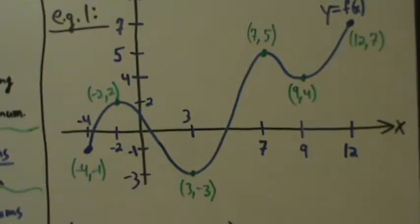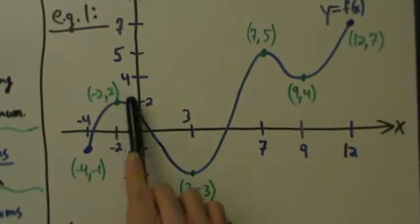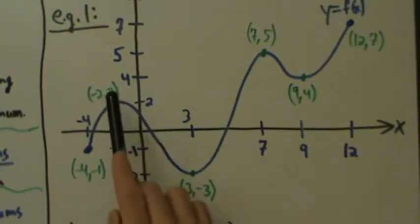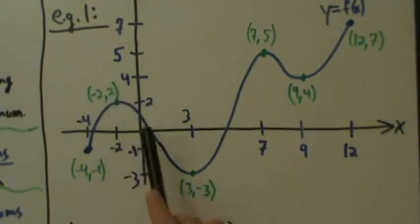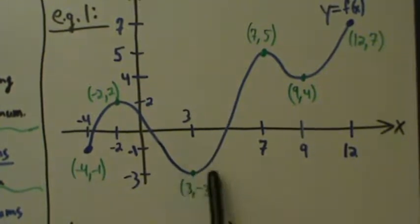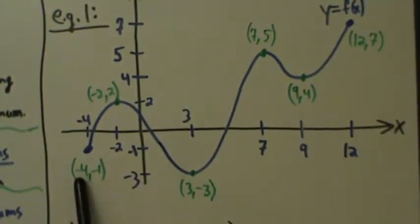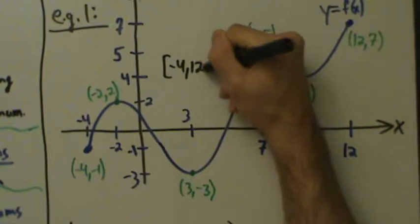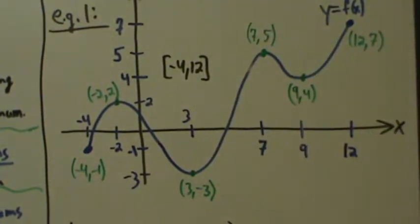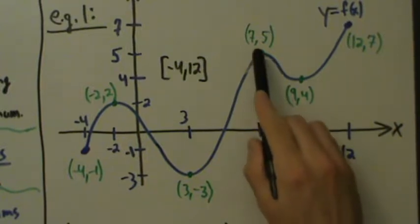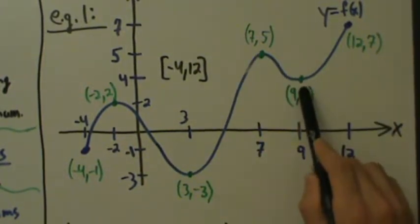So where are the local mins and maxes? Well, here that's clearly a local max, right? Because locally, in that little neighborhood around it, this is the largest value that we have for the function. Here's a local min — locally, in this little neighborhood, this is the smallest value of the function. And actually, this is also the global min, because there are no smaller values of the function anywhere. This function is only defined from x equals negative 4 to x equals 12. And then here's another local max at 7 comma 5, another local min, and then here.